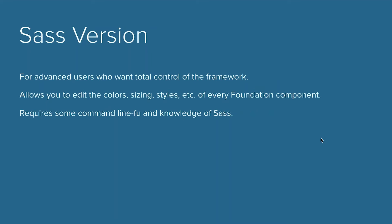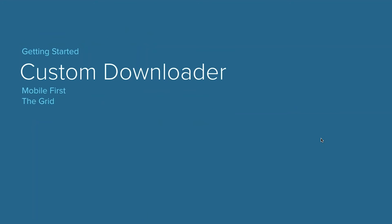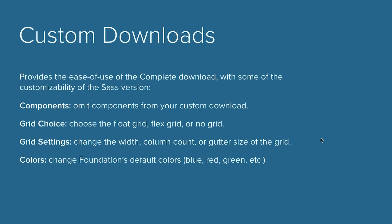As I was talking about the Sass version, this is for advanced users who want total control of the framework. This does allow you to edit colors, sizing, styles, etc., of every Foundation component. You might be thinking — I can do that anyway in CSS by overriding styles. That's true, but with the Sass version, it comes with a settings file that allows you to directly modify the Sass variables, which would then change that variable everywhere else. The easiest example is colors — my primary color when I download this is going to be that Foundation blue. Change that one variable, and everywhere that color is used will update. This does require some command line knowledge and familiarity with Sass, but with the Foundation for Sites template, that is something that will make you feel like a ninja in no time.